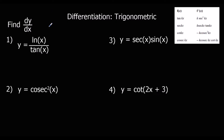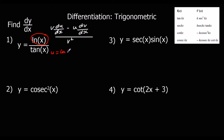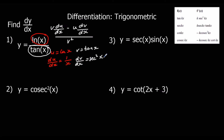The quotient rule says dy/dx is (v du/dx minus u dv/dx) over v squared. Here we've got u as ln x, which means du/dx is 1 over x. And we've got v as tan x — tan differentiated goes to sec squared, so dv/dx is sec squared x.